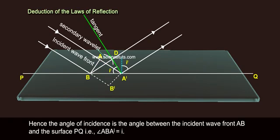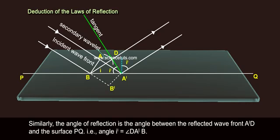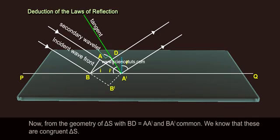Similarly, the angle of reflection is the angle between the reflected wave front AD and the surface PQ, that is angle I' equals to angle DA'B.